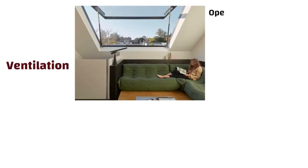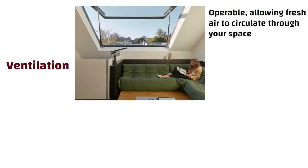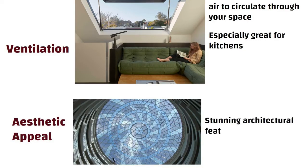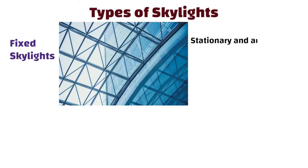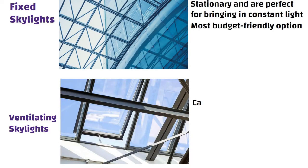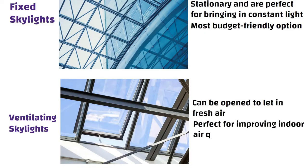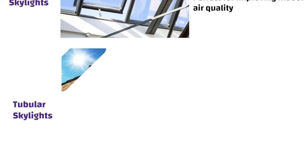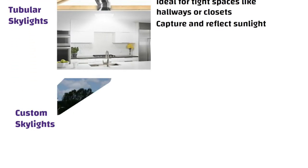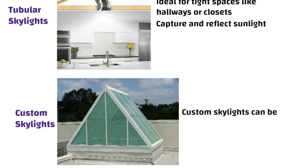Ventilation: some skylights are operable, allowing fresh air to circulate through your space — especially great for kitchens. Aesthetic appeal: skylights can be a stunning architectural feature, enhancing the aesthetics of any room. Types of skylights: fixed skylights are stationary, perfect for constant light and the most budget-friendly option; ventilating skylights can be opened to let in fresh air, improving indoor air quality; tubular skylights are smaller and ideal for tight spaces like hallways or closets, capturing and reflecting sunlight into your home; custom skylights can be tailored to fit unique design preferences.